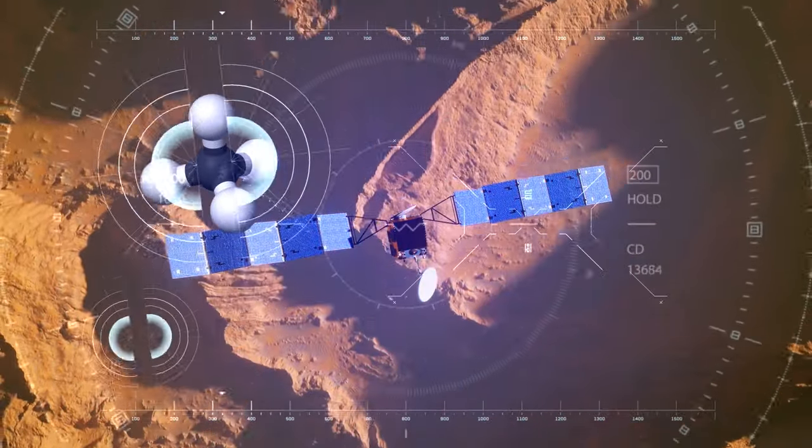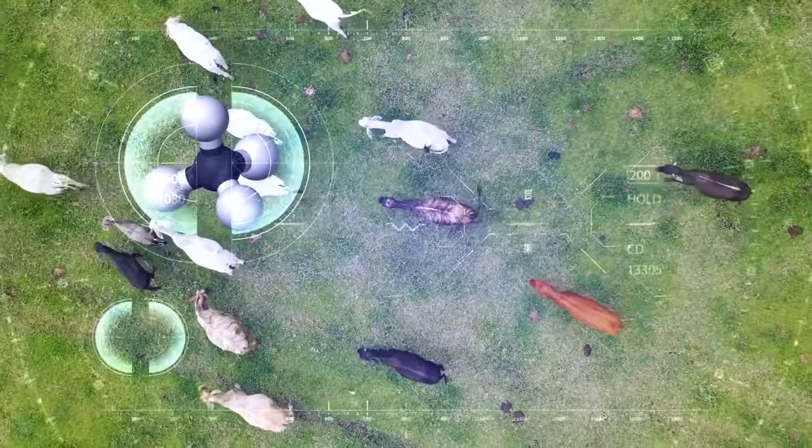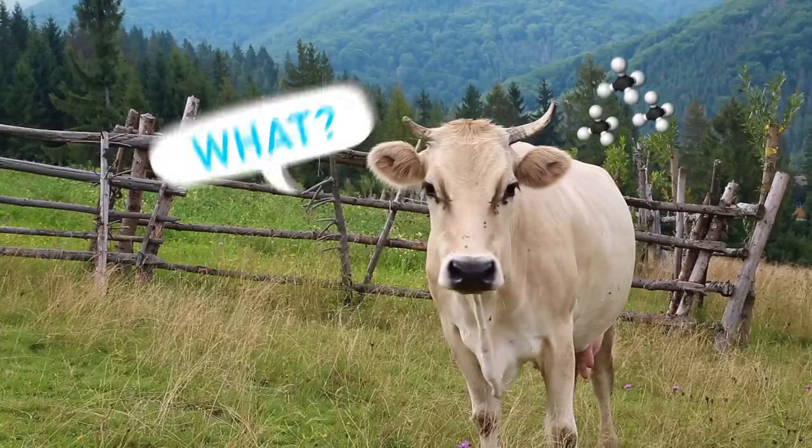On our planet, the biggest part of this gas in the atmosphere is produced by living creatures, for example, by cattle digesting food and emitting, you know, gas.